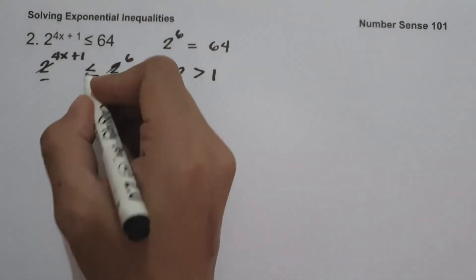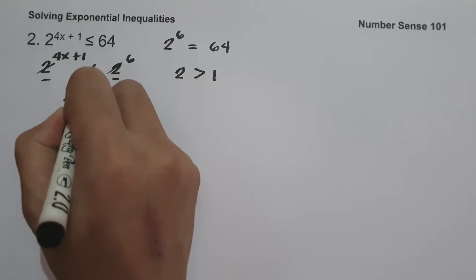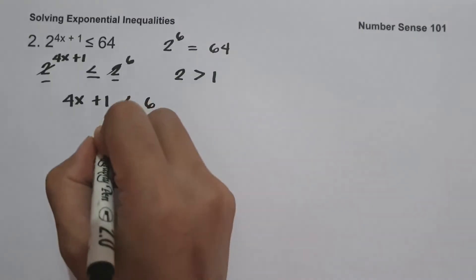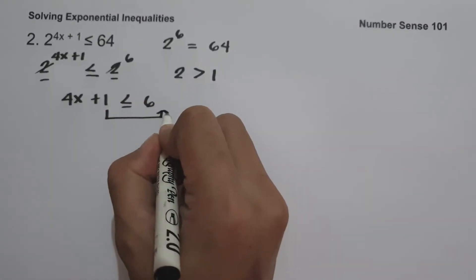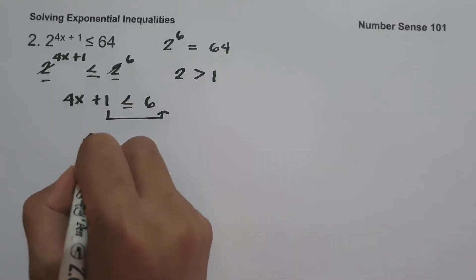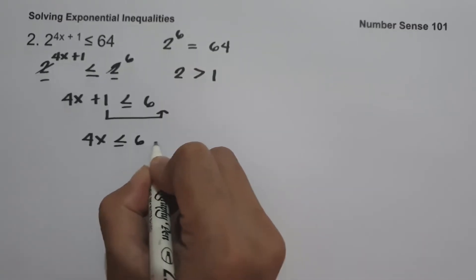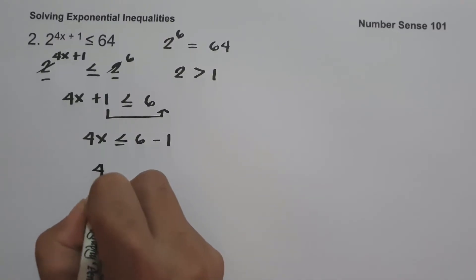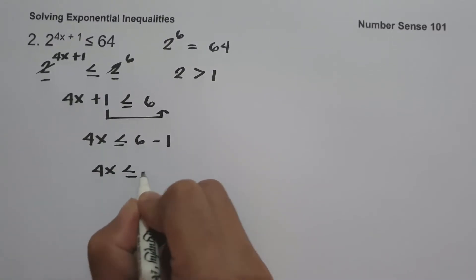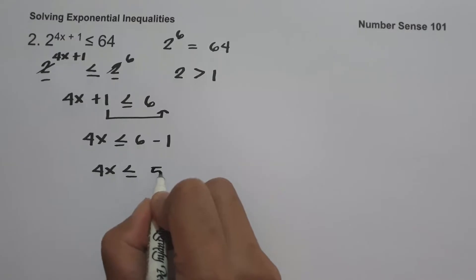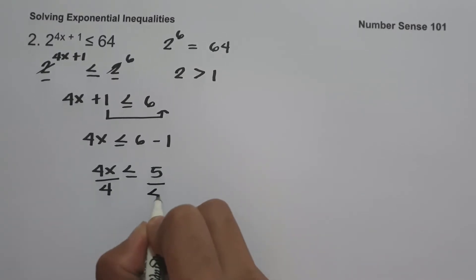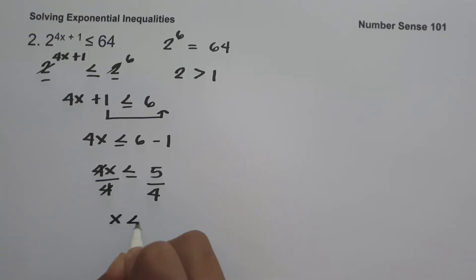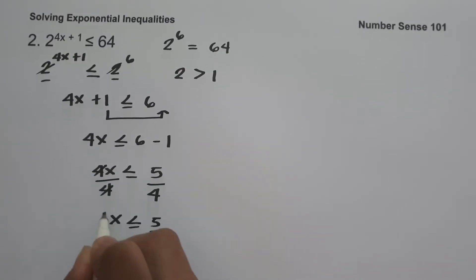Canceling the base gives us 4x plus 1 less than or equal to 6. Moving 1 to the other side gives 4x less than or equal to 6 minus 1, which is 5. Dividing both sides by 4 gives x less than or equal to 5 over 4.